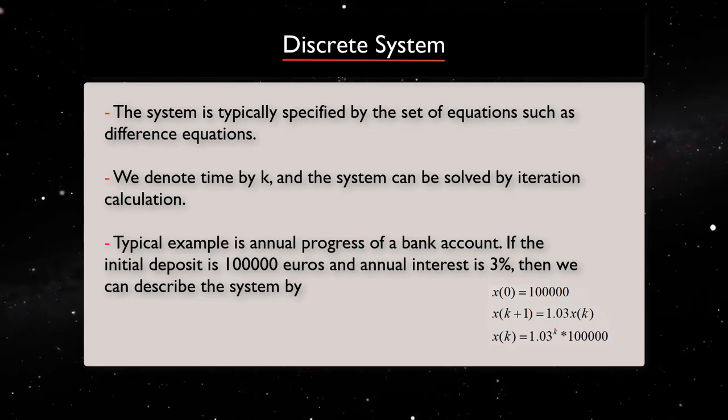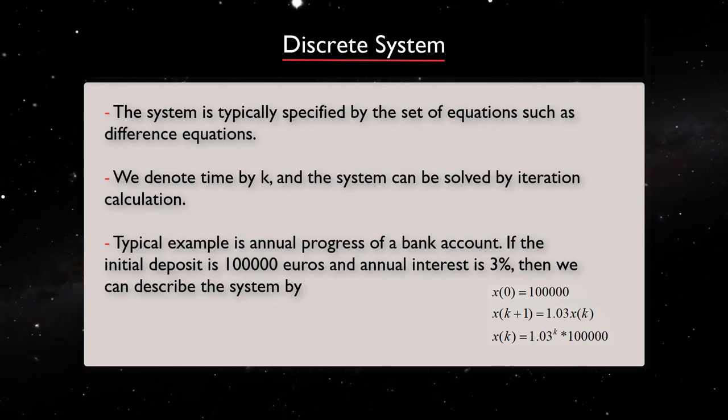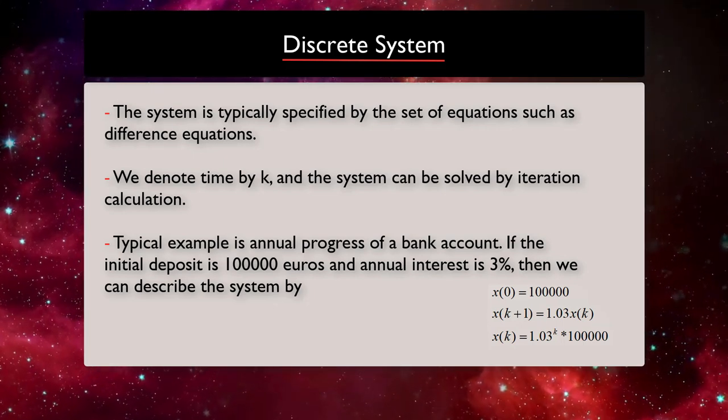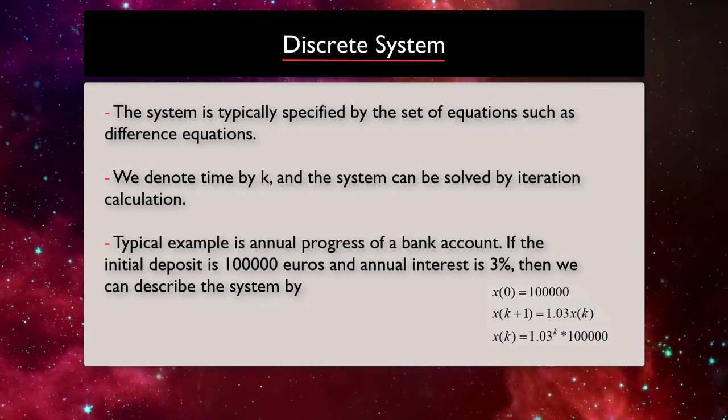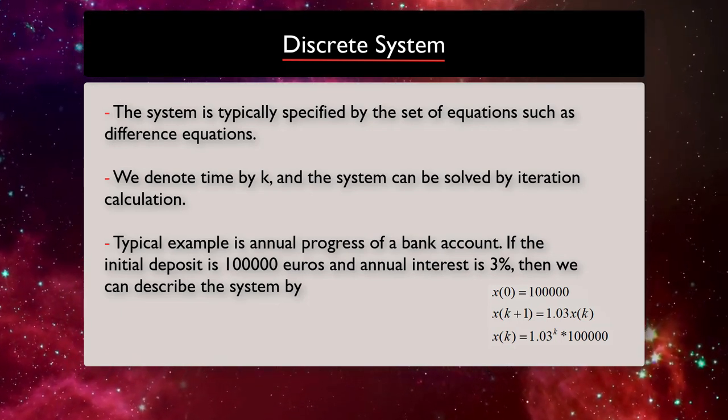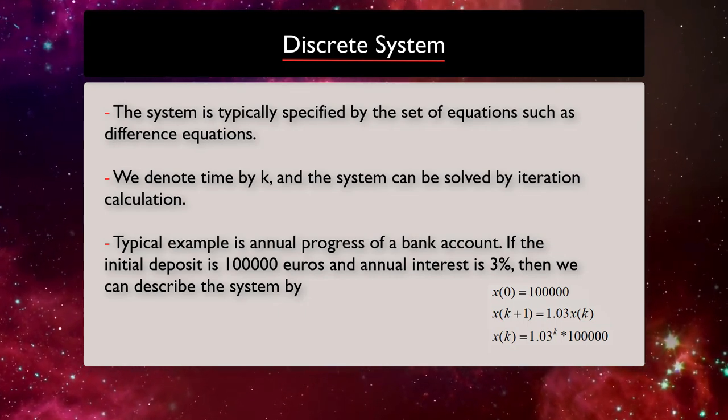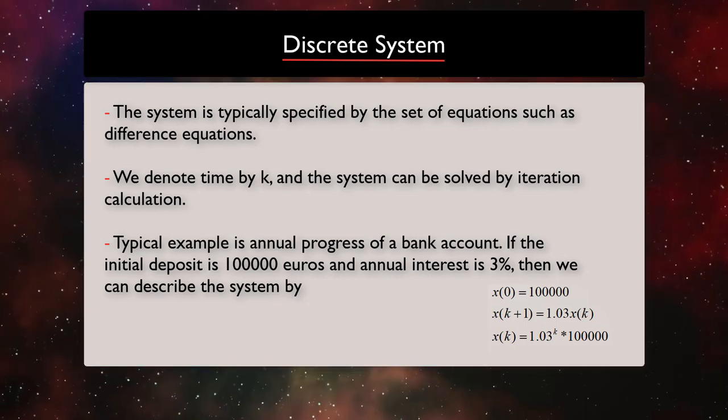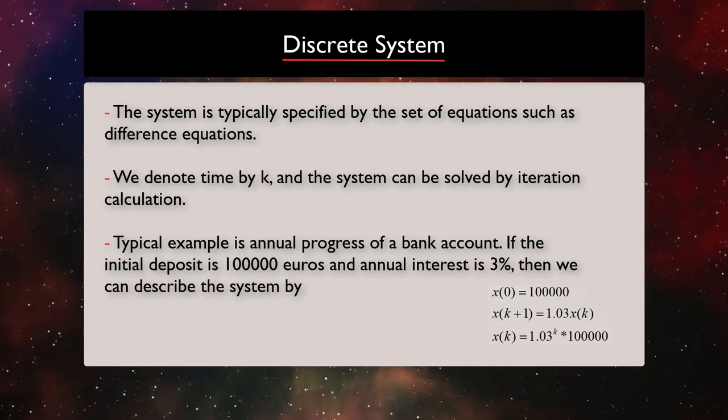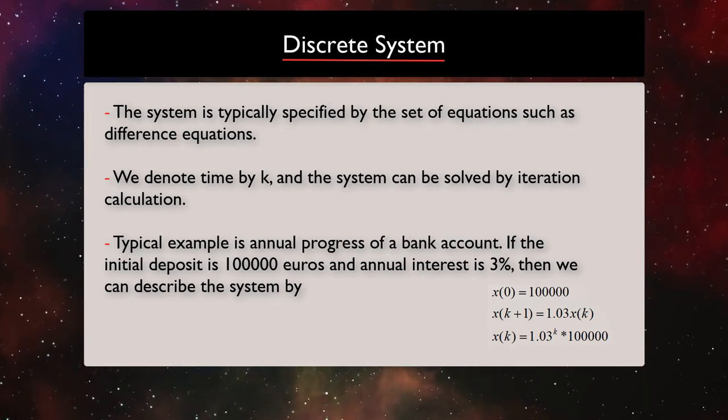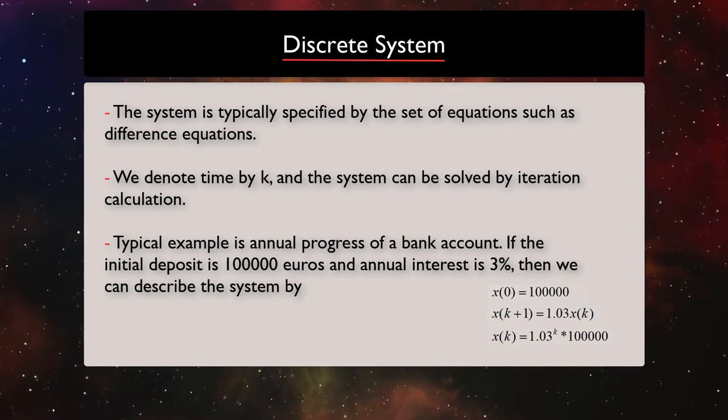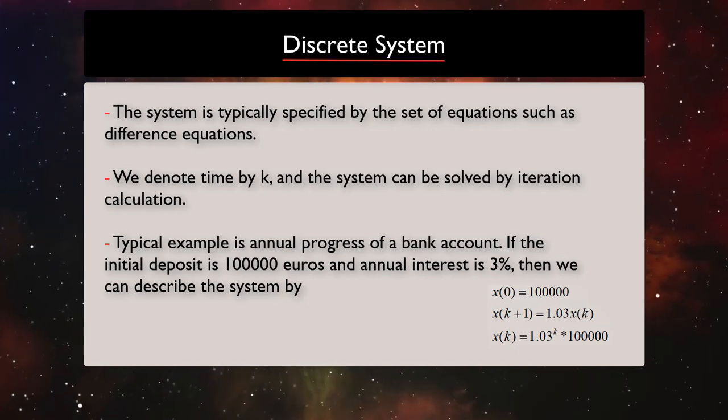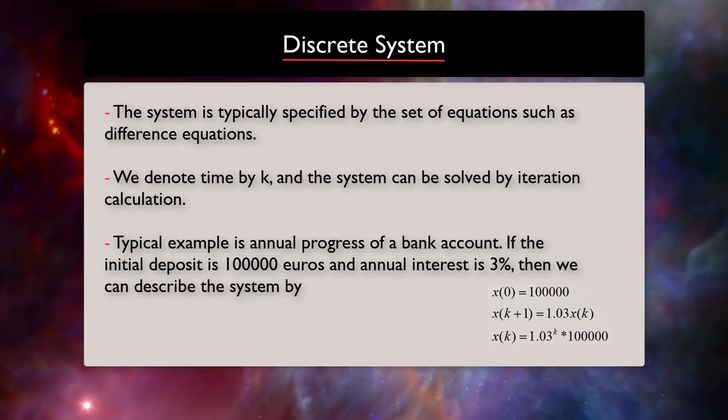A very typical example of a discrete dynamical system is annual progress of a bank account. If the initial deposit is 100,000 euros and the annual interest is 3%, then we can use a difference equation to describe the whole system where the amount of money in the account at the next year will be 1.03 times the amount of money at the current year in the account.